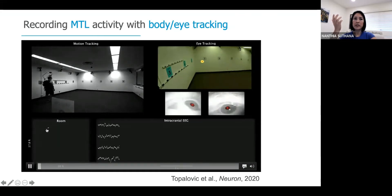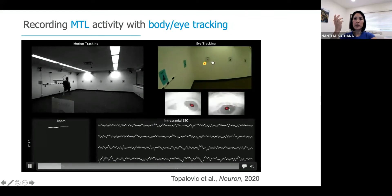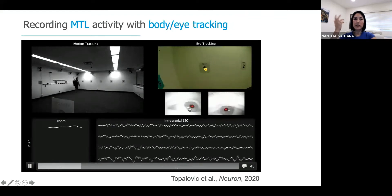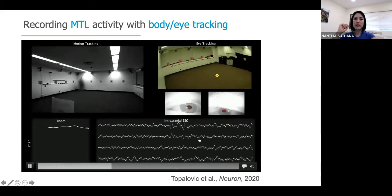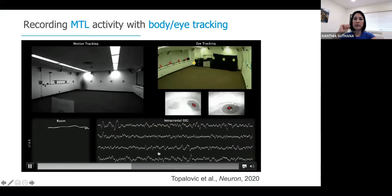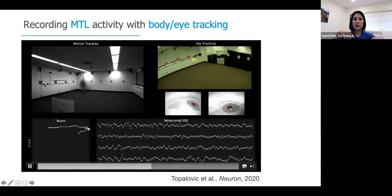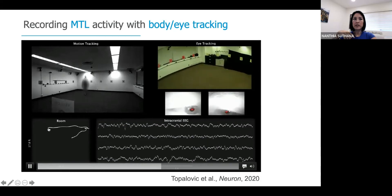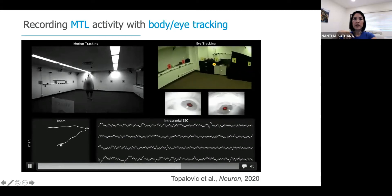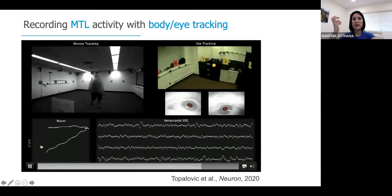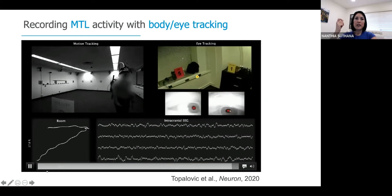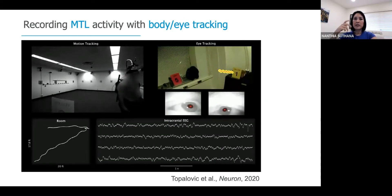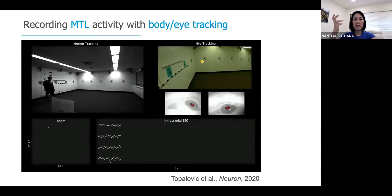So that's what you're going to see in the video: they're walking around, this is where they're looking, this is what their pupil size looks like, this is what their brain activity looks like from four bipolar channels implanted in the medial temporal lobe, and this is their position in the room. They're walking and doing a spatial memory task. This is the method we're using to show you all the data I'll present today.